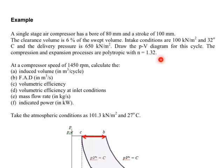There are six items we need to calculate, and we are told the compressor is running at 1450 rpm. Let's get started.